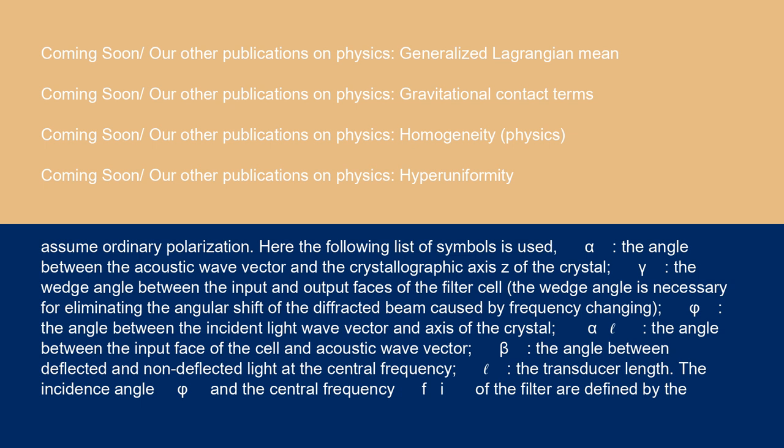Here the following list of symbols is used. α: the angle between the acoustic wave vector and the crystallographic axis z of the crystal. γ: the wedge angle between the input and output faces of the filter cell. The wedge angle is necessary for eliminating the angular shift of the diffracted beam caused by frequency changing. φ: the angle between the incident light wave vector and axis of the crystal. α': the angle between the input face of the cell and acoustic wave vector. β: the angle between deflected and non-deflected light at the central frequency. The transducer length.